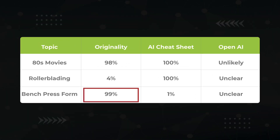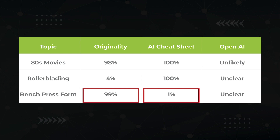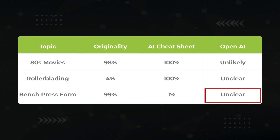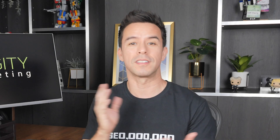Here's our baseline. Ultimately, both Originality and AI Cheatsheet are inconsistent, and OpenAI's tool can probably just be ignored. Let's start to do some magic tricks to see if I can improve these scores.